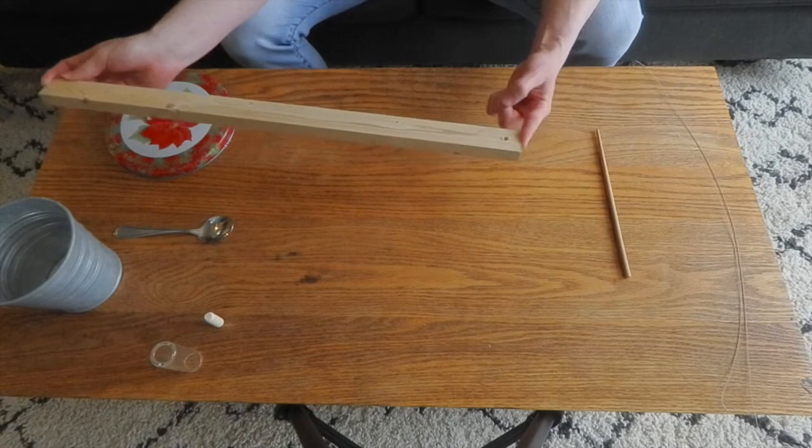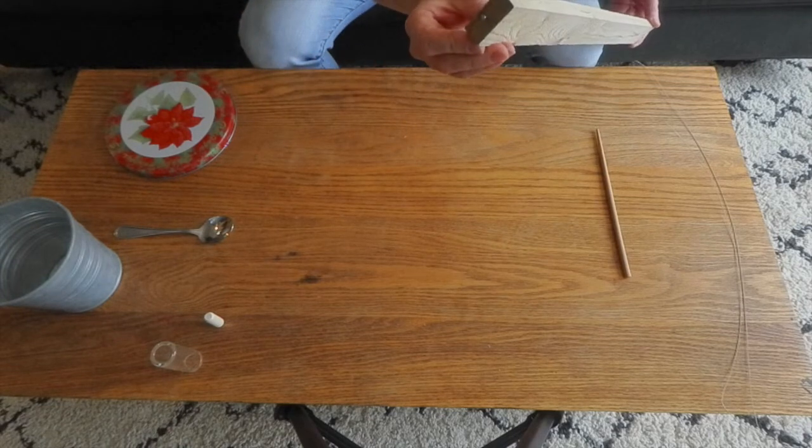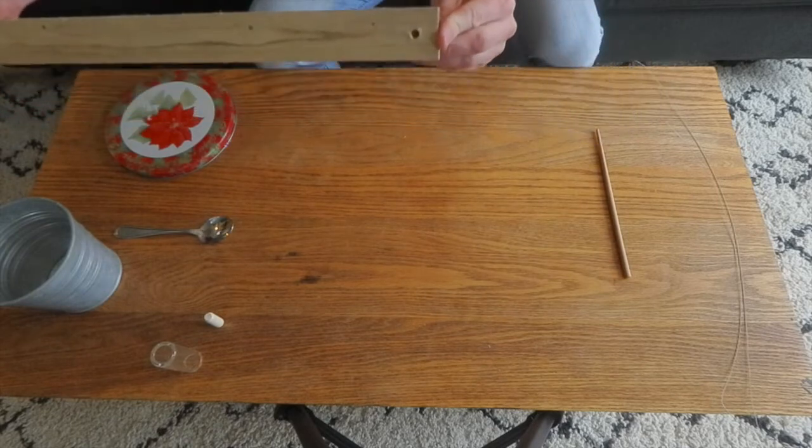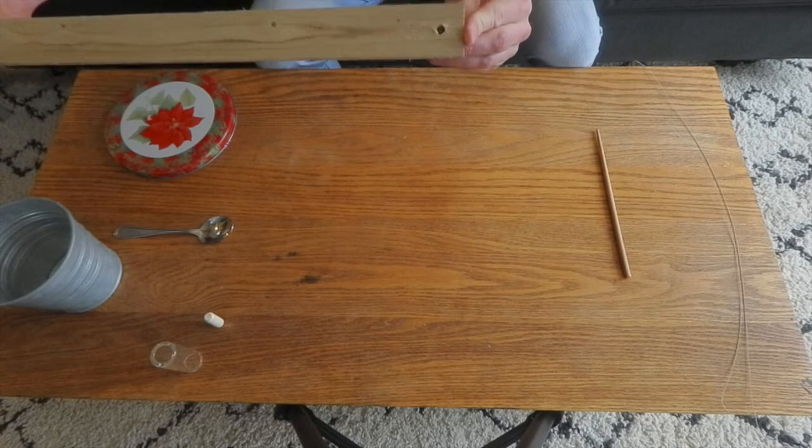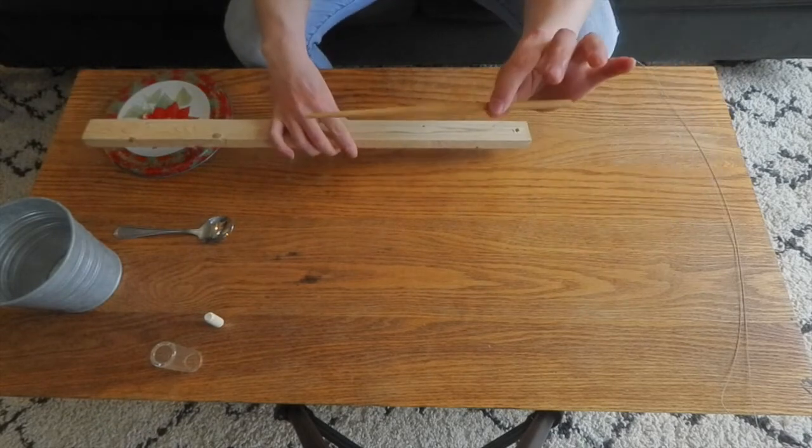To prepare it for our one-string instrument, I put a nail right in the end to loop a string around, and then I pre-drilled a hole to put a peg through. The peg I'm using is a chopstick, and I pre-drilled a tiny hole in the chopstick for putting the string through.